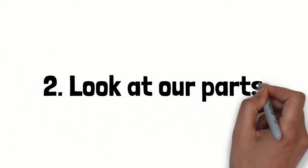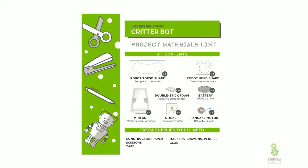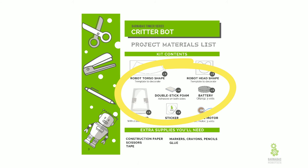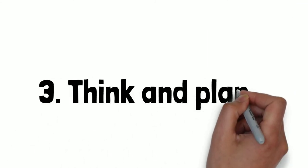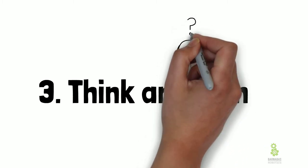Now step two: we need to look at our parts. We came up with something in our brain, but to bring it to reality, we have to actually see what parts we have. So in our box we have our critter bot kit, and inside there we have some instructions and parts. If you take the instructions out, you're going to see all the parts. There are two main sections: the parts inside the box that you're going to need, and extra parts like markers and scissors to do decoration and build. Now that we know our parts, let's think and plan — how does this fit together? How do our parts help me bring my imagination to reality?